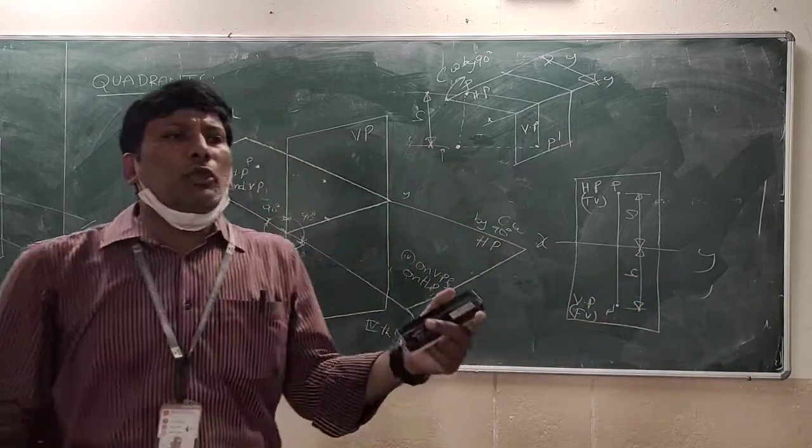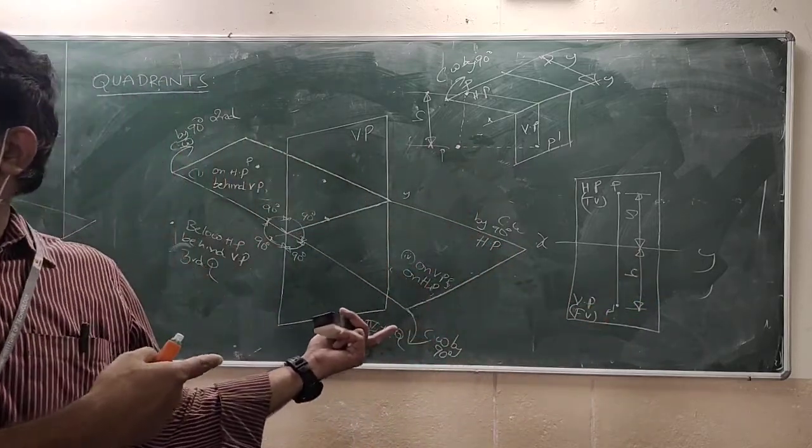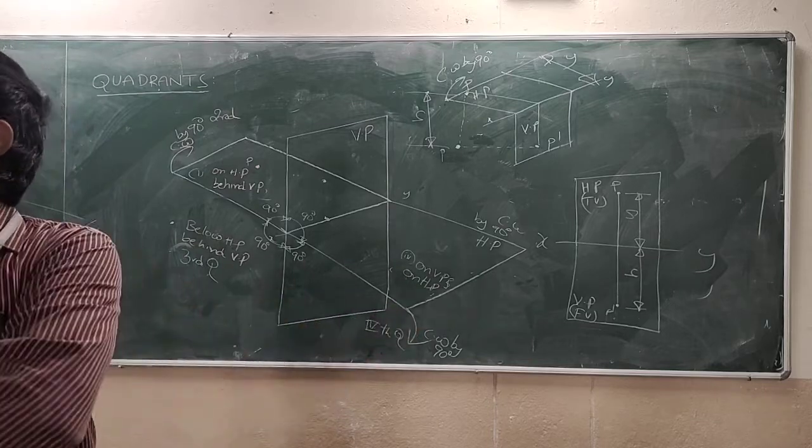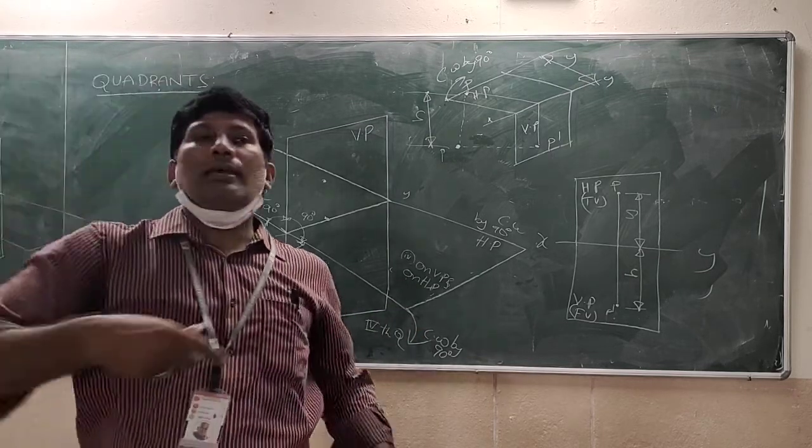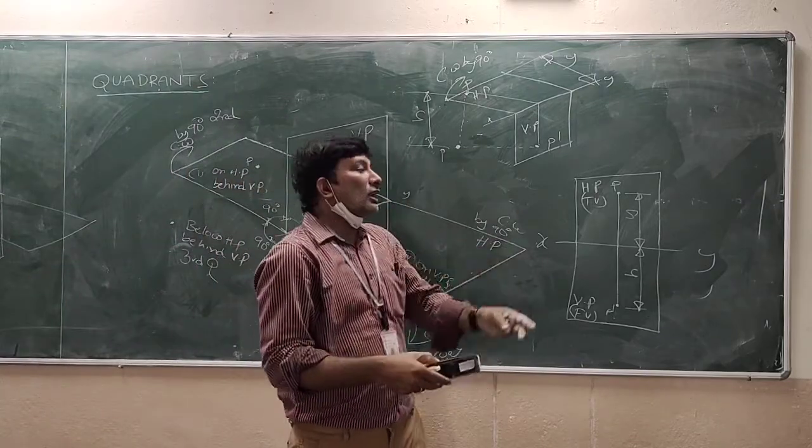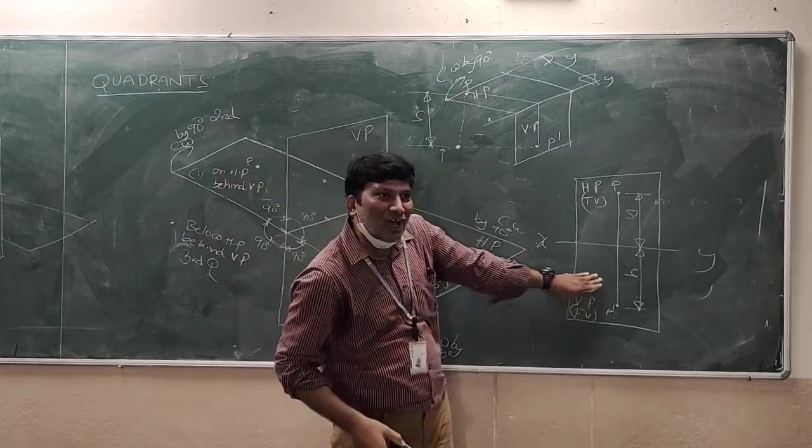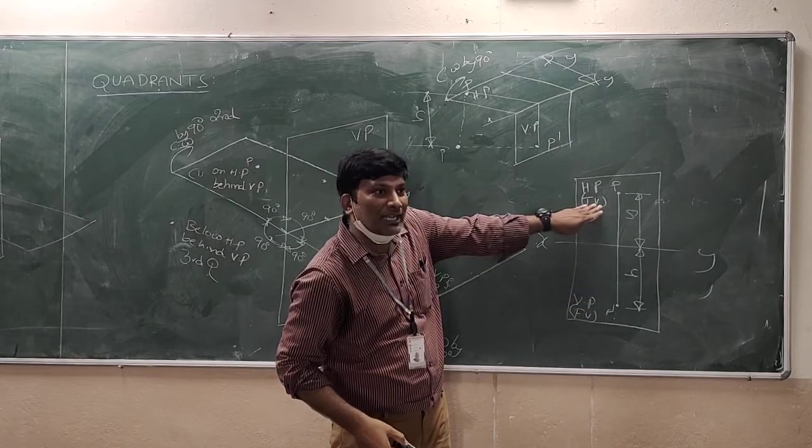Now, you observe - this is a particular coordinate frame. When you are comparing with quadrant one, it is quite opposite. Because in quadrant one, if you want to refer, in quadrant one this is your horizontal plane and this is your vertical plane.